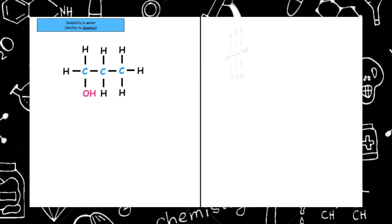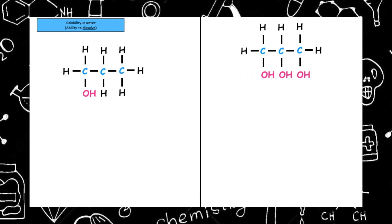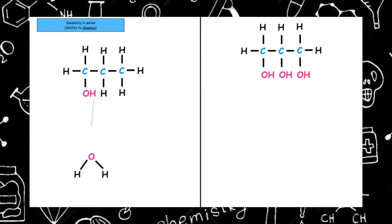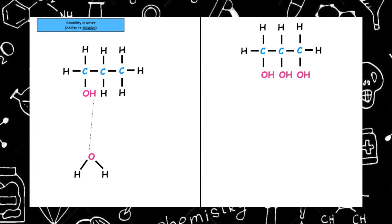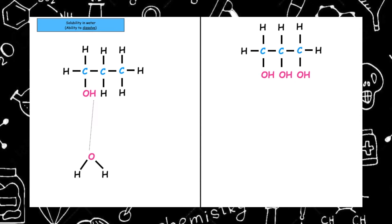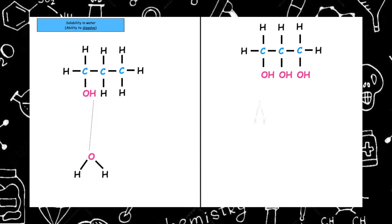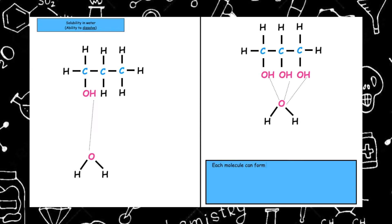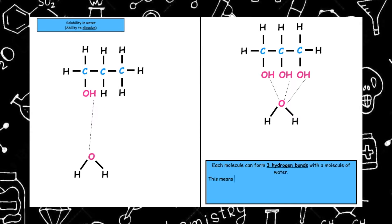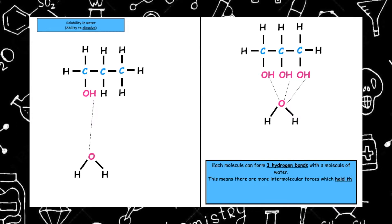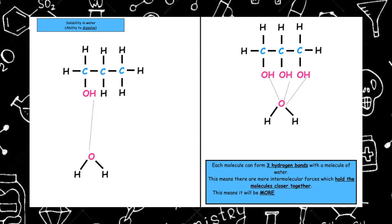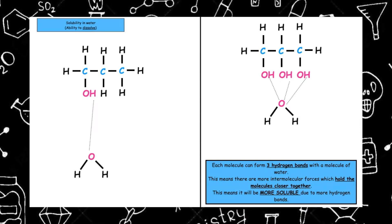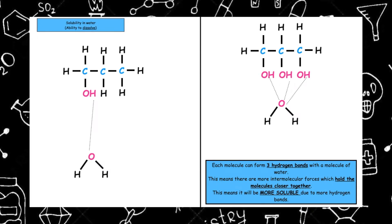The last property we look at is solubility in water, which is the ability of an organic molecule to dissolve in water. Propan-1-ol can only form one hydrogen bond. Water is polar, and we know the phrase 'like dissolves like', so that will be soluble in water. However, propan-1,2,3-triol has three hydrogen bonds, whereas water has two hydrogen bonds, so propan-1,2,3-triol is more like water and therefore more soluble. It has more intermolecular forces between molecules which hold them closer together, and therefore it will be more soluble.